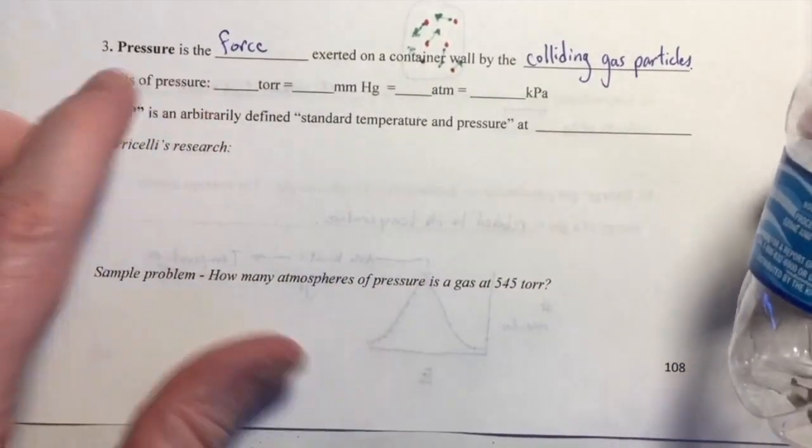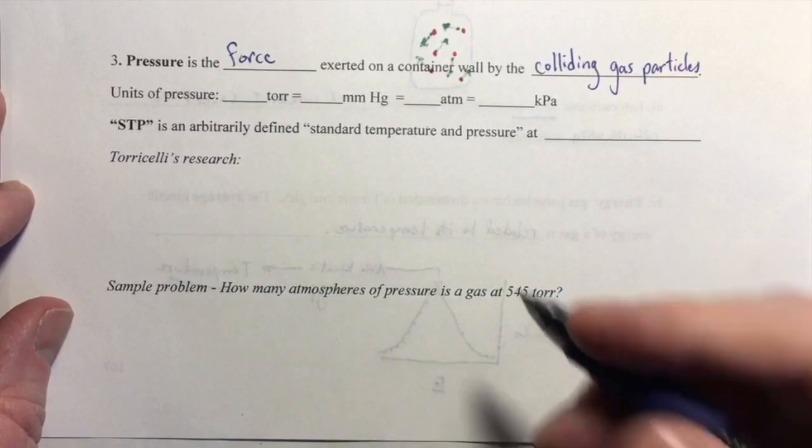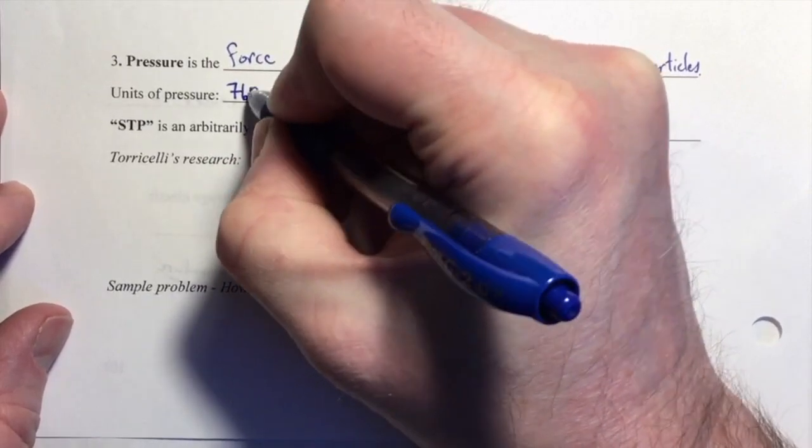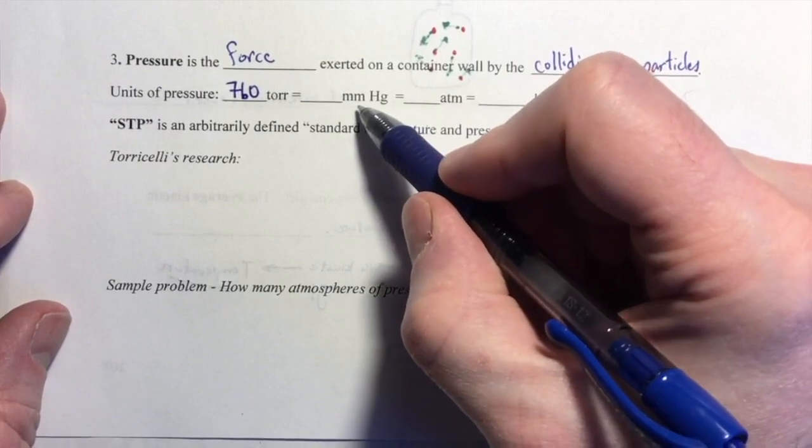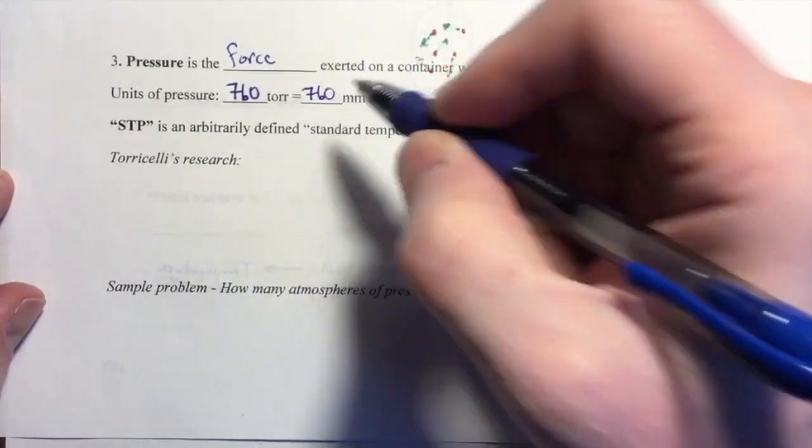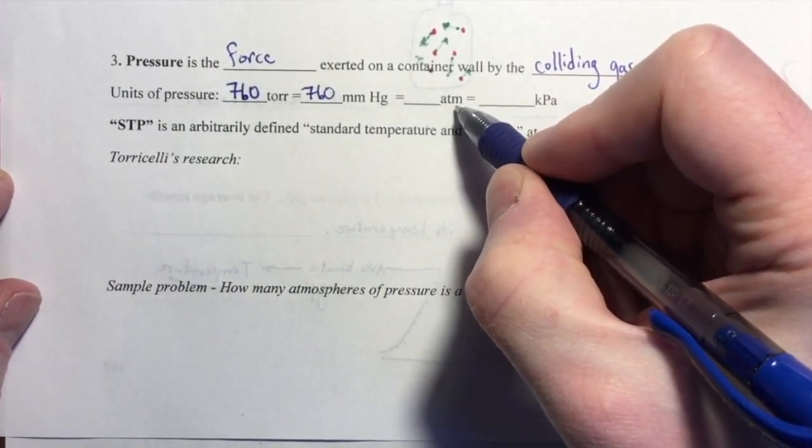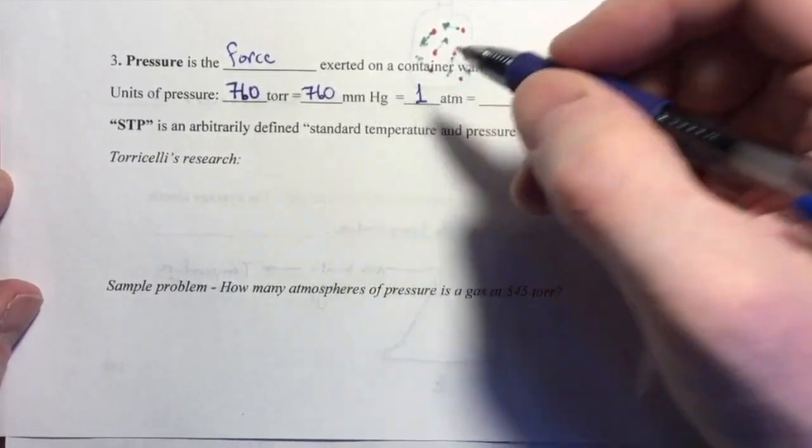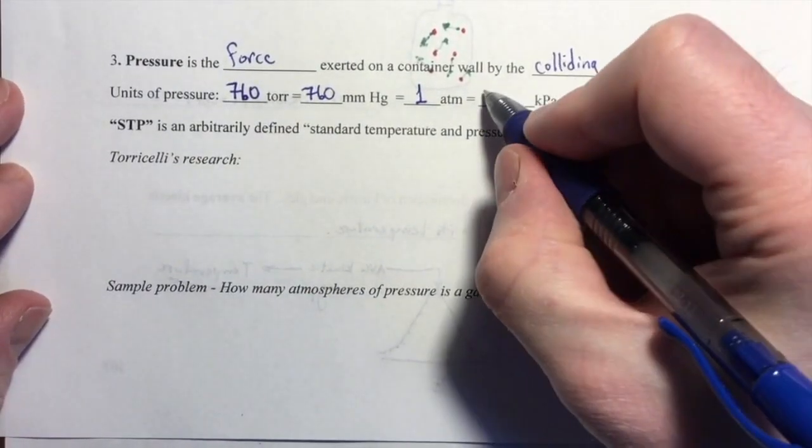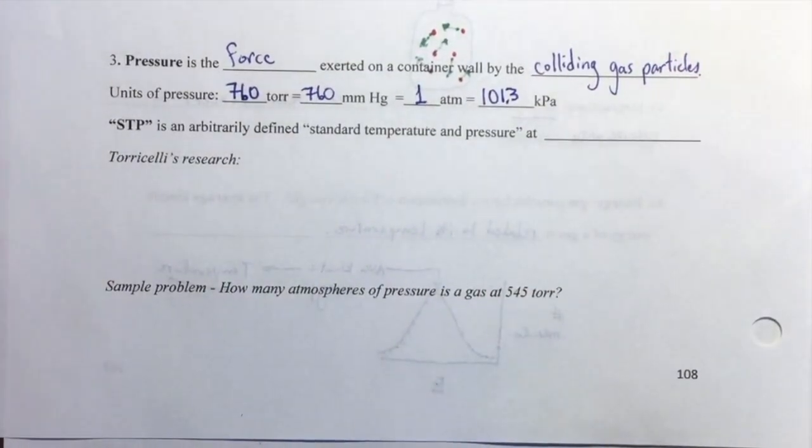We call those forces pressure, and there are a number of different units used to measure pressure. One of the units is Torr, T-O-R-R, 760 torr. Another unit is the millimeter of mercury, also 760 millimeters of mercury. Another unit is the atmosphere, ATM, equal to 1 atmosphere. And another unit you might encounter is the kilopascal, 101.3 kilopascals.